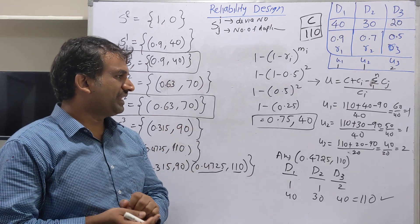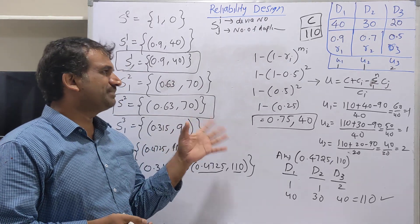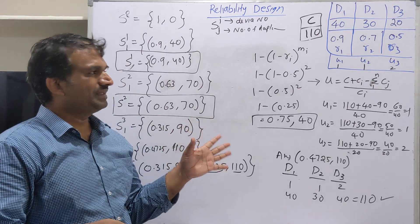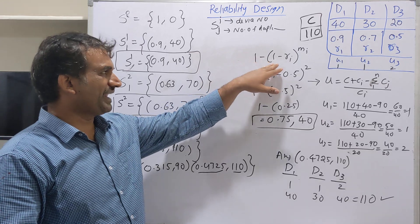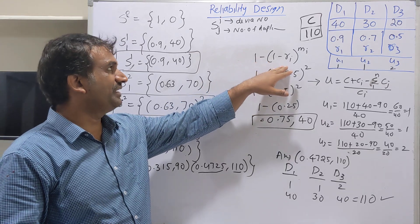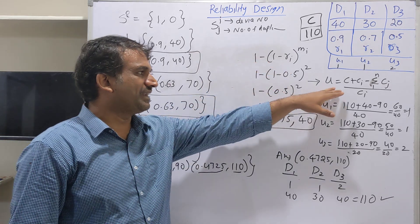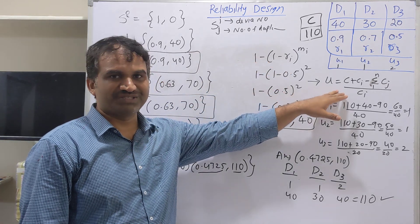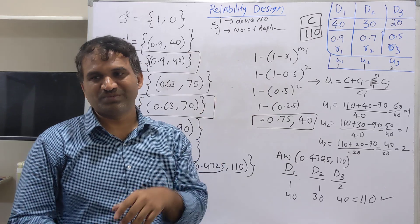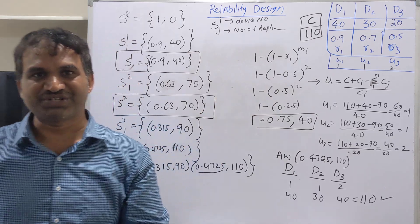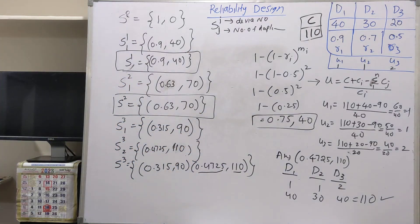This is about the reliability design problem with a simple example. The important formulas are how to calculate the reliability using 1 − (1 − Ri)^Mi and how to calculate the number of duplications. Thank you so much. See you in the next session. Bye.